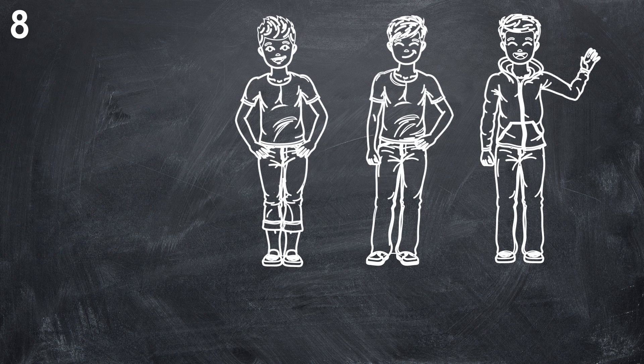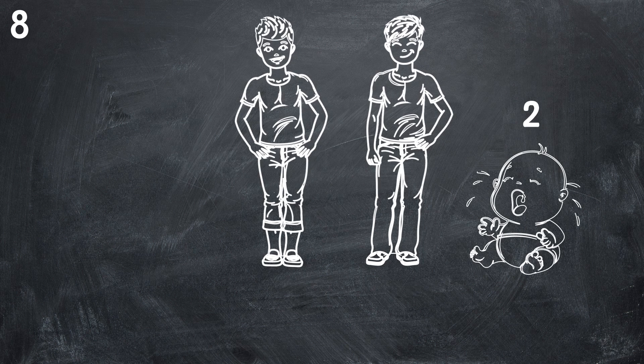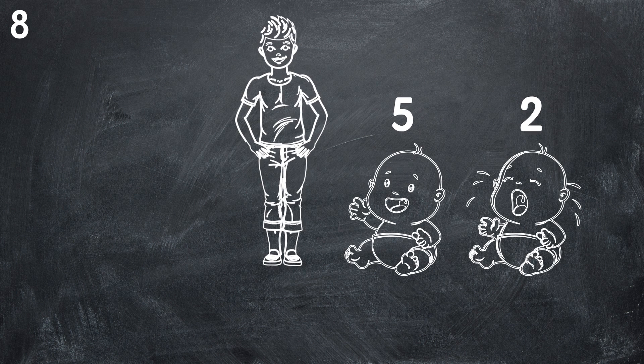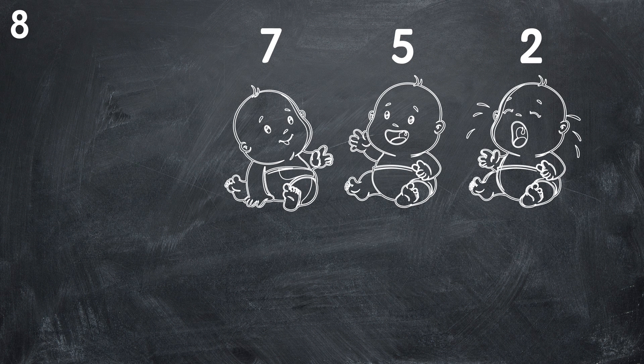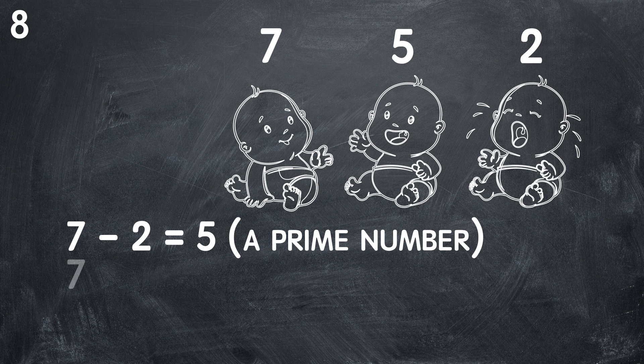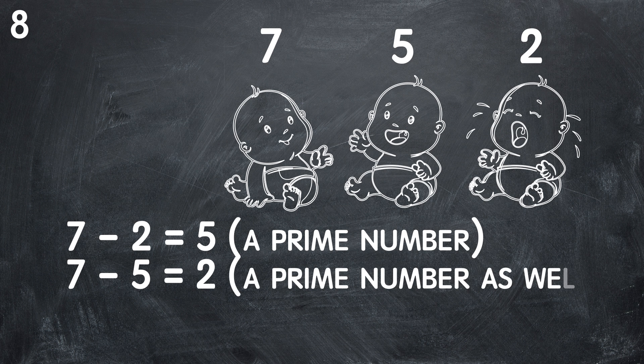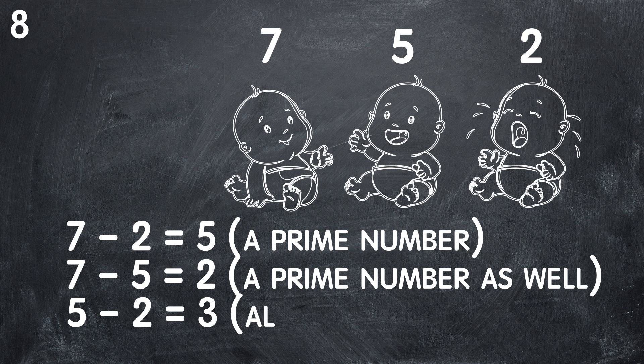And this is the answer. Peter is 2, Mark is 5, and Sam is 7. As for the age difference, 7 minus 2 equals 5, a prime number. 7 minus 5 equals 2, a prime number as well. 5 minus 2 equals 3, also a prime number.